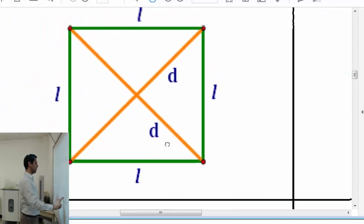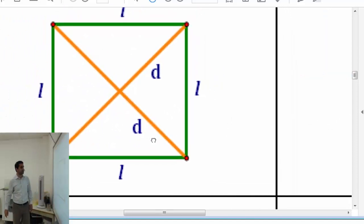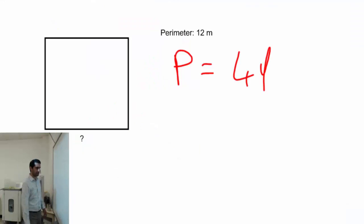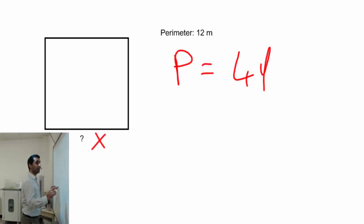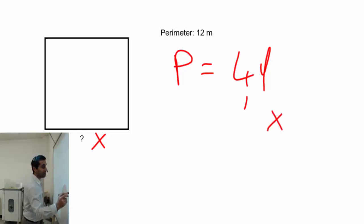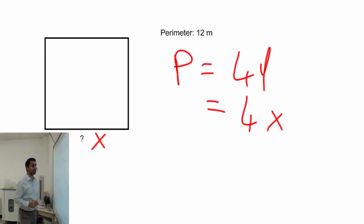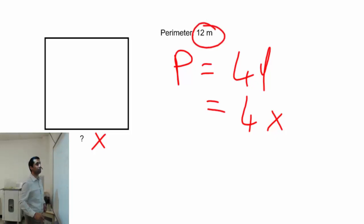Looking at the formula handout, l is one of the sides of the square. Going back to the question, the side length is the unknown — so l equals x. The perimeter is given as 12. So we write: 12 equals 4x.